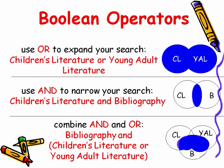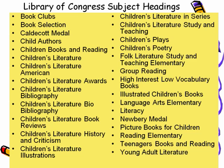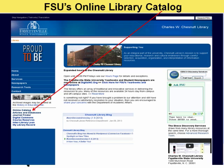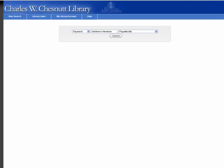The next thing I want to show you is Library of Congress subject headings related to children's literature. These are official controlled vocabulary search terms you can use, such as book clubs, children's literature, book reviews, literacy, and Newbery medal. You can see how all of these intersect with the topic of children's literature. Now we're going to look at the library catalog — FSU's online catalog allows you to look for books, ebooks, government documents, archives, and audiovisual material such as DVDs, CDs, and VHS.